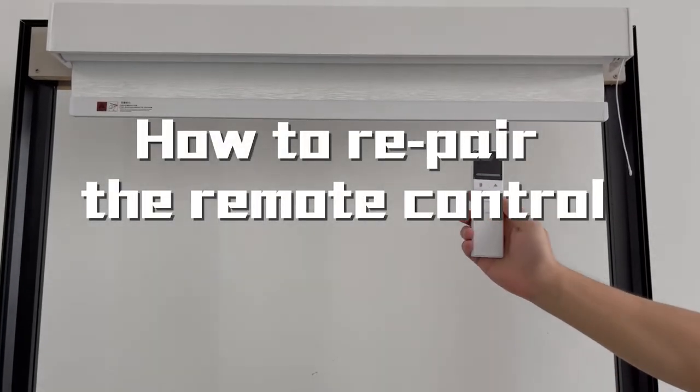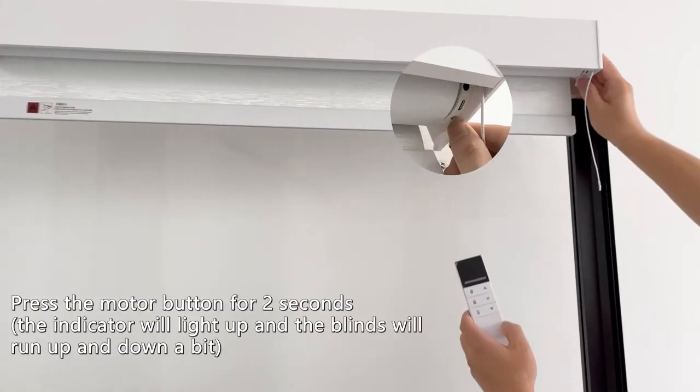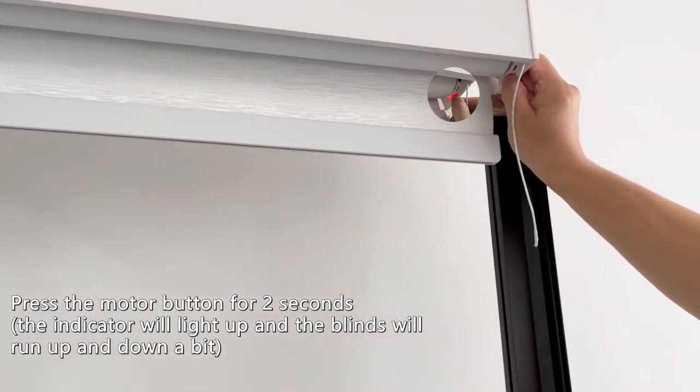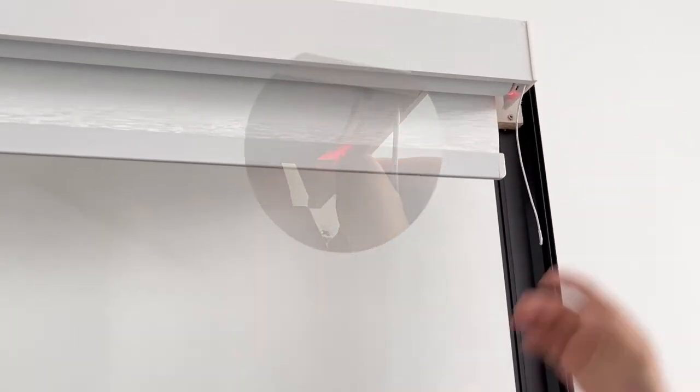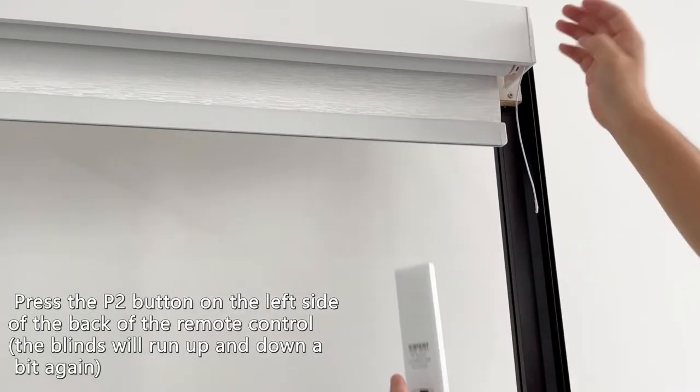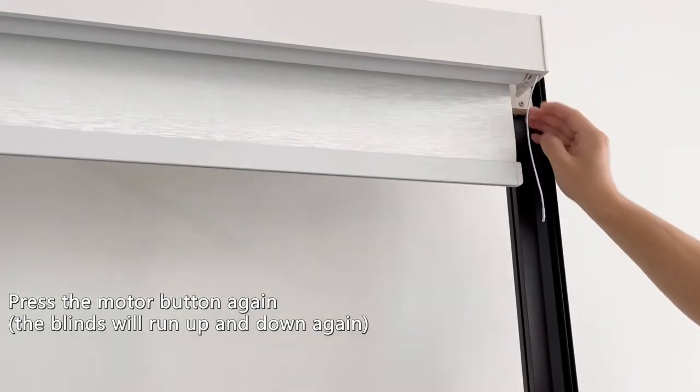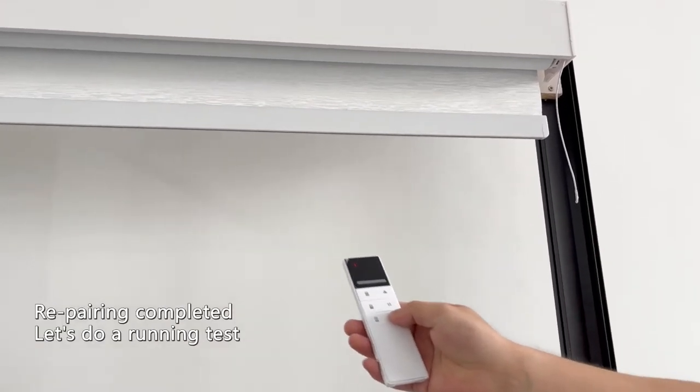How to repair the remote control. Press the motor button for four seconds. Press the PR button on the left side of the back of the remote control. Press the motor button again. Repairing completed.